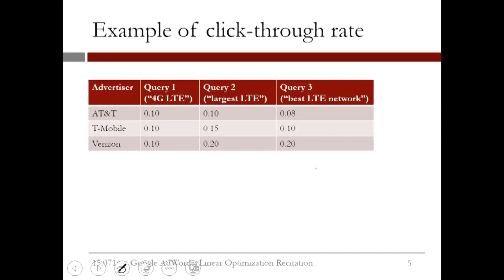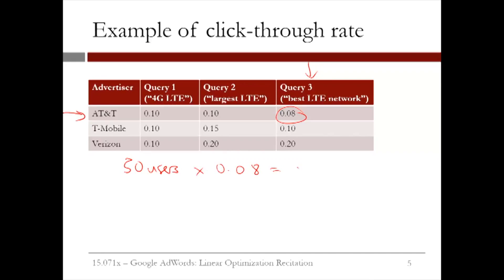To illustrate this, for the example that we just introduced, suppose that we have the following click-through rates. The number 0.08 here means that there is an 8% chance that a user who searches for best LTE network will click on AT&T's ad if it is shown to them. In terms of the number of users who click on an ad for a given query, this means that for 50 users, if the click-through rate is 0.08, we expect to see 4 users clicking on the ad. Similarly, if there are 100 users who view the ad and 8% of them click on the ad, we expect to see 8 users clicking on AT&T's ad for Query 3.